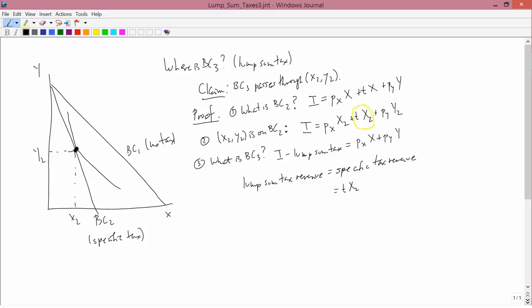Therefore, we could write the budget constraint as I minus, instead of writing the lump sum tax, write it as T times X2 equals PX times X plus PY times Y. Now, this is BC3. This is the lump sum tax budget constraint BC3. X and Y are still variables here. We just pull in T times X2 on the left-hand side because of our insistence here that the lump sum tax revenue equal the specific tax revenue.